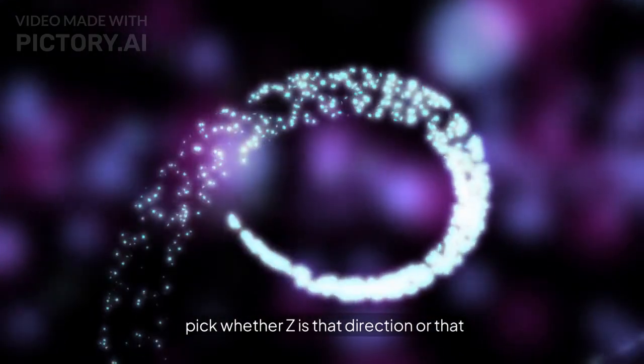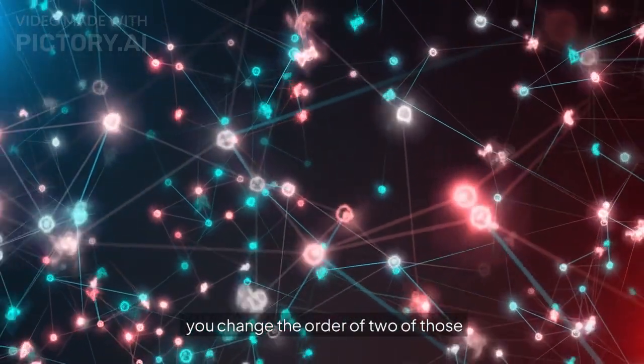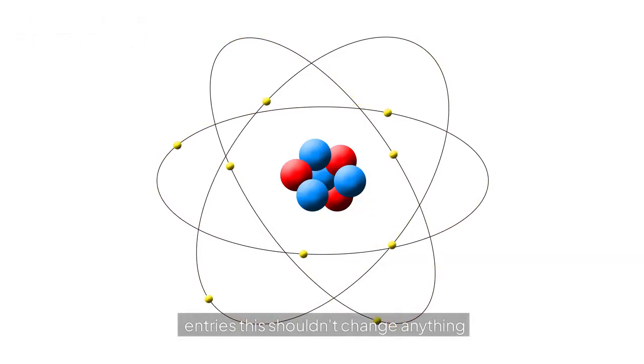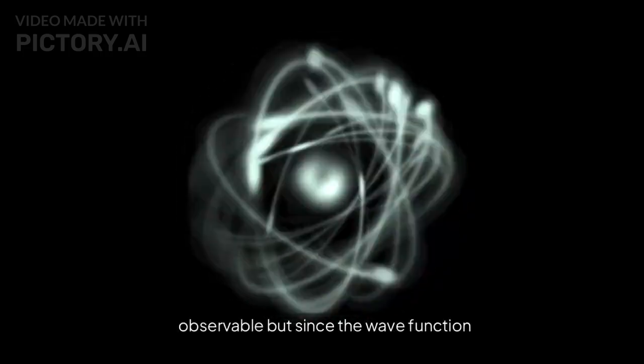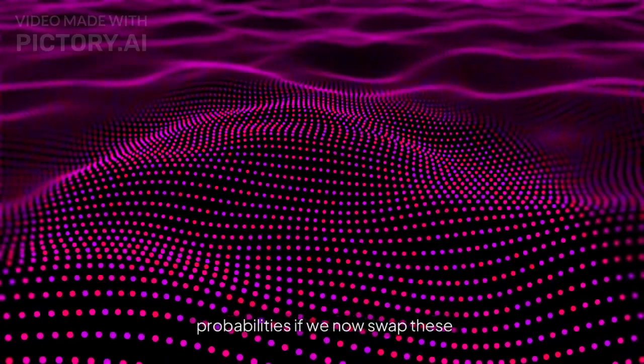But the order in which these axes appear here has no physical meaning. You just pick this somehow. It's like you can pick whether Z is that direction or that direction. It's an arbitrary choice. So if you change the order of two of those entries, this shouldn't change anything observable. But since the wave function isn't observable, we can multiply it with some factor that has an absolute value of one because that won't change probabilities.